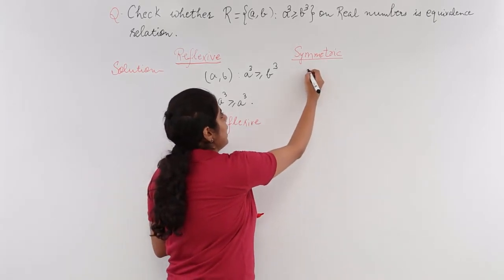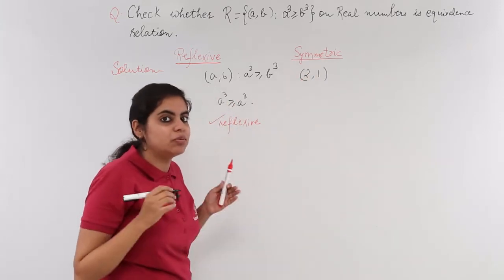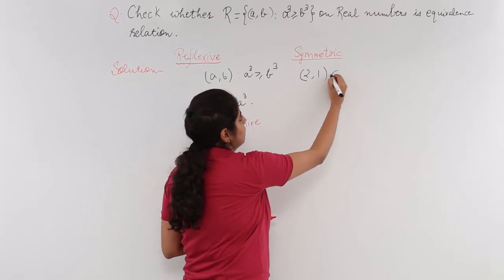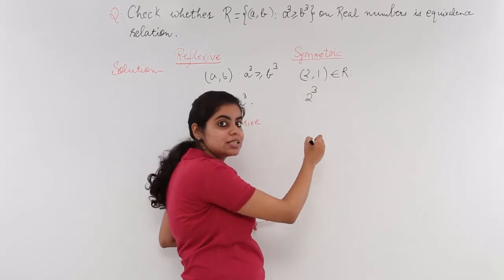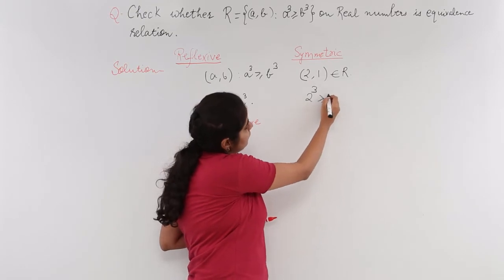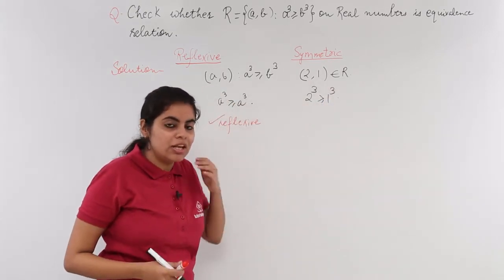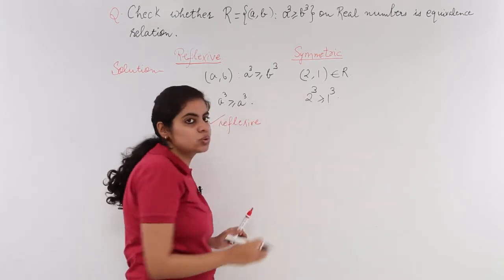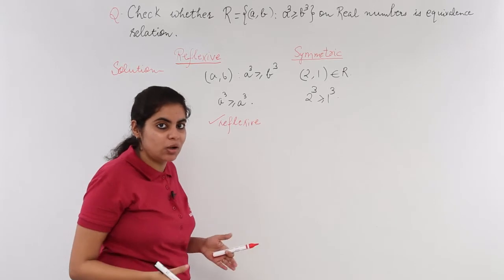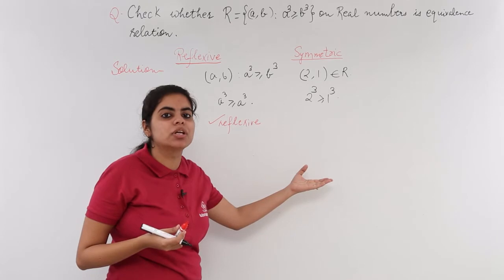If I have 2 and 1 as a and b belonging to R, I know that 2³ ≥ 1³. This is true, this is valid. Now if I interchange the places—meaning (2,1) belongs to R—I have to check whether (1,2) also belongs to R. If yes, then it is symmetric.